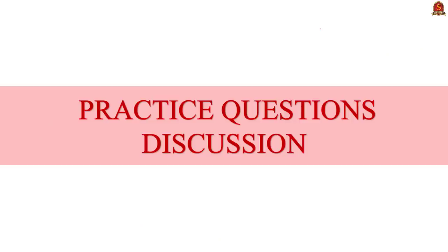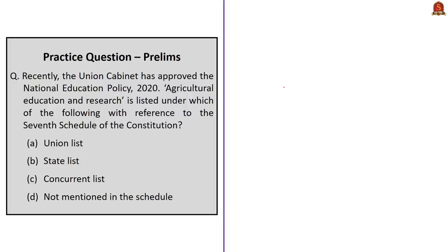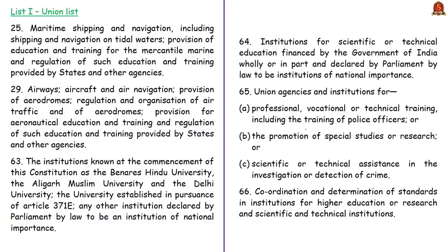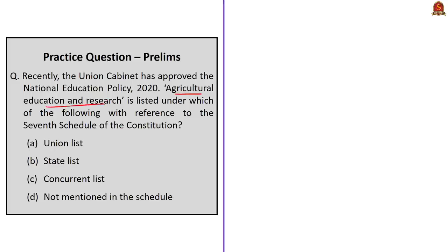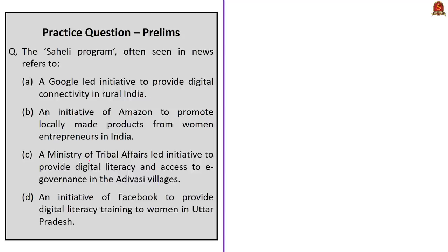Now for the practice questions discussion. Question: The Union Cabinet has approved NEP 2020 — agricultural education and research is listed under which of the following with reference to the Seventh Schedule of the Constitution? While education generally comes under the Concurrent List, certain areas come under the Union List and certain under the State List. Agricultural education and research comes under the State List, so the correct answer is option B.